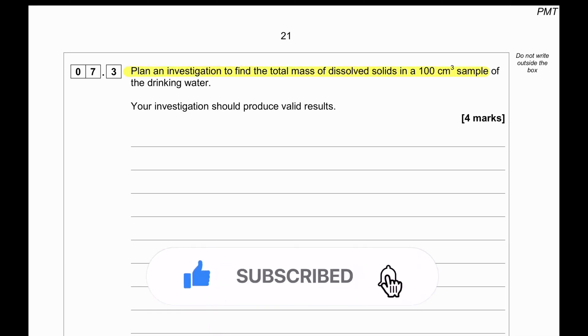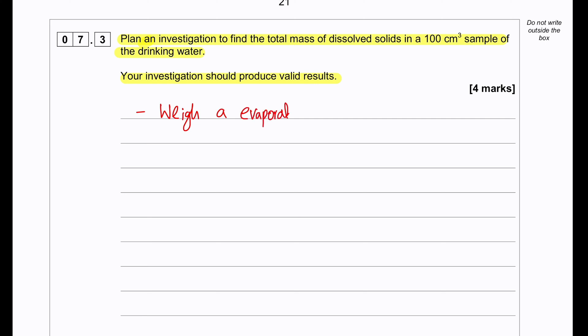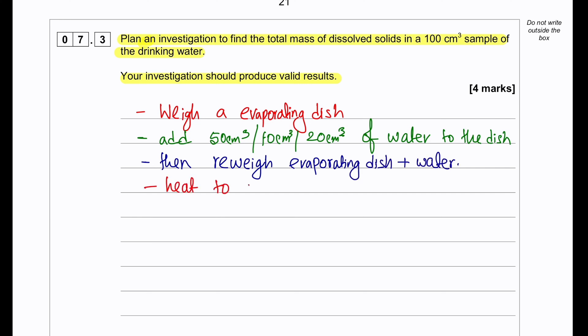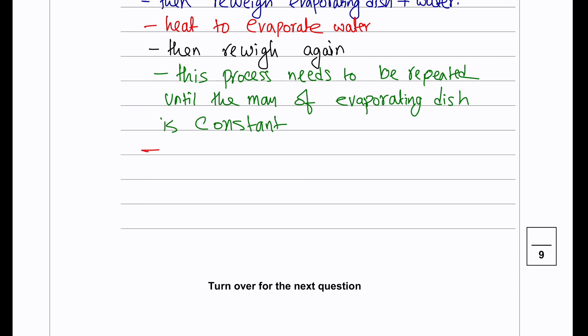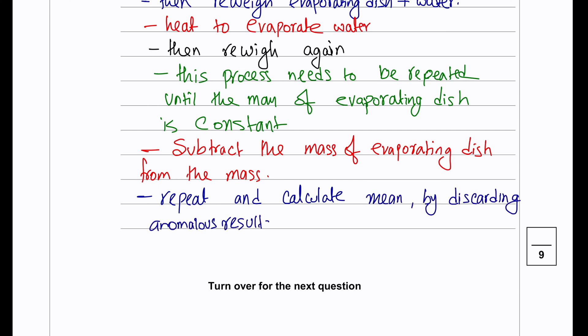Plan an investigation to find the total mass of dissolved solid in a 100 cm³ sample of drinking water. Your investigation should produce valid results. Weigh an evaporating dish, add 100 cm³ of water, then weigh the evaporating dish again with the water. Heat to evaporate the water and reweigh. Repeat this heating process until the mass of the evaporating dish is constant. Subtract the mass of evaporating dish from the final mass to get the mass of the solid that remains. Repeat and calculate the average, discarding any anomalous results.